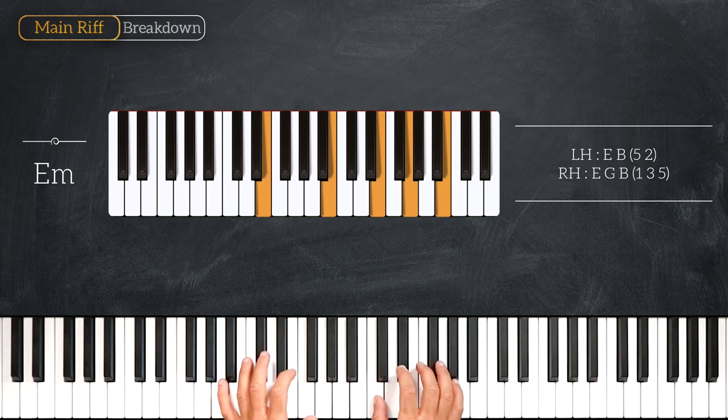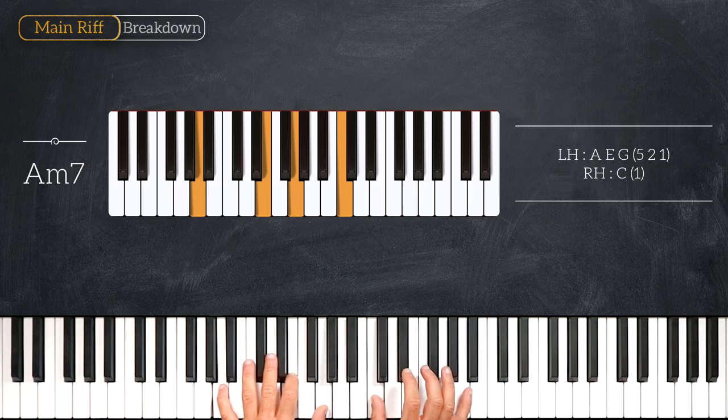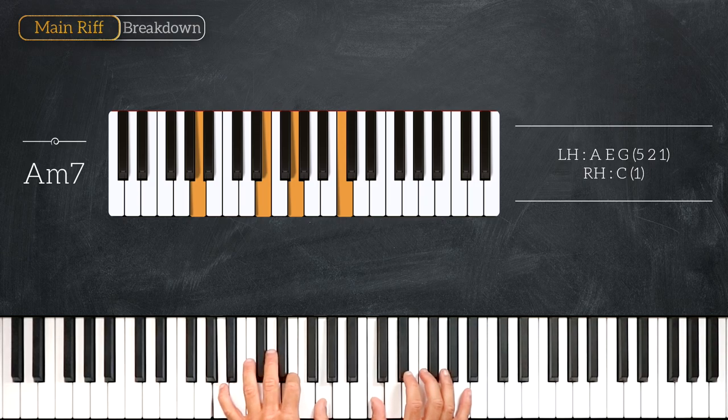Then we move on to an A minor 7 chord, playing A, E, G on the left hand and C on the right hand.